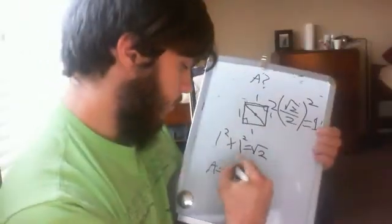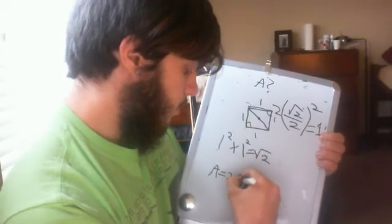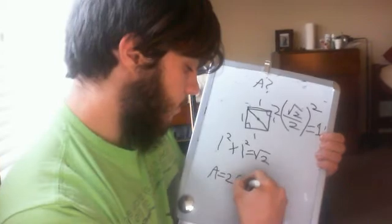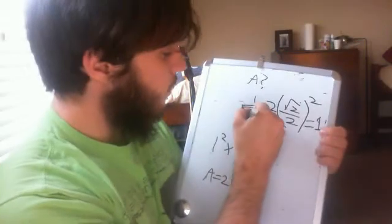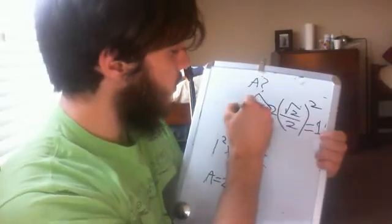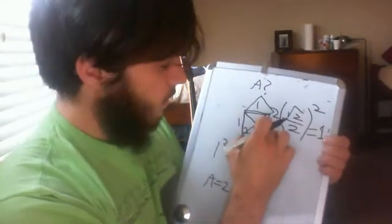The formula is A equals 2 times triangle balloon over 2 squared. Now, geometrically, this should look like this. And this area is equal to this area.